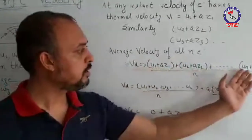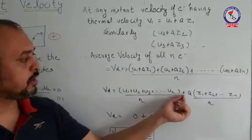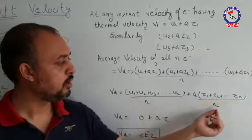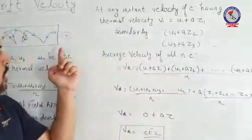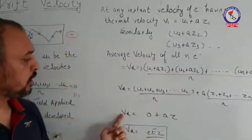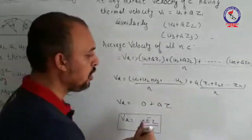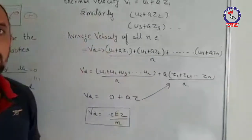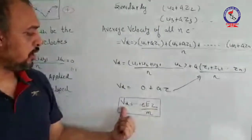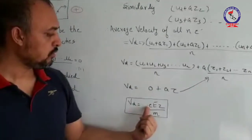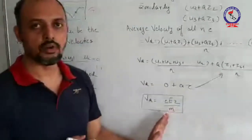Simplifying this expression: (u1 + u2 + … + un) / n is zero, as shown in Equation 1. What remains is vd = a·τ, where τ is the average relaxation time of all the particles. Substituting the value of a, we get vd = −eEτ/m. This is the expression for drift velocity.